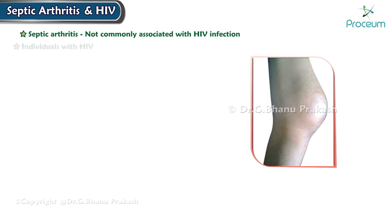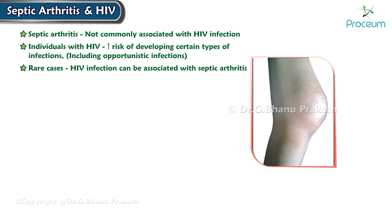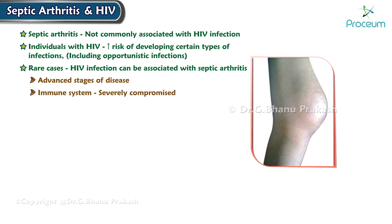Regarding septic arthritis and HIV: septic arthritis is not commonly associated with HIV infection, however individuals with HIV may have an increased risk of developing opportunistic infections. In rare cases, HIV infection can be associated with septic arthritis, particularly in advanced stages of the disease or when the immune system is severely compromised.